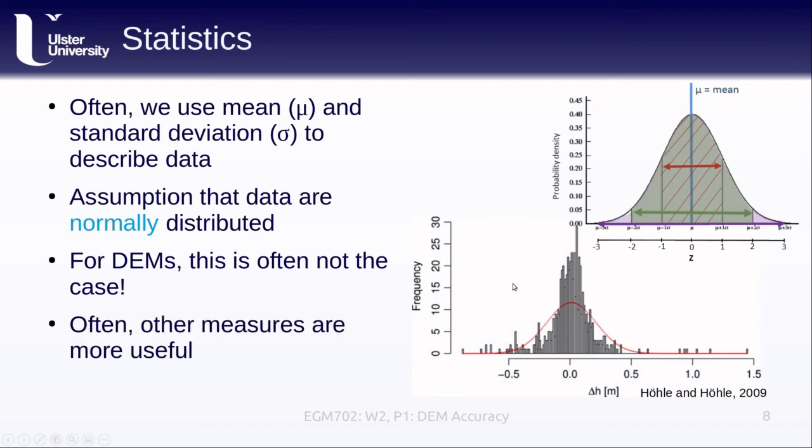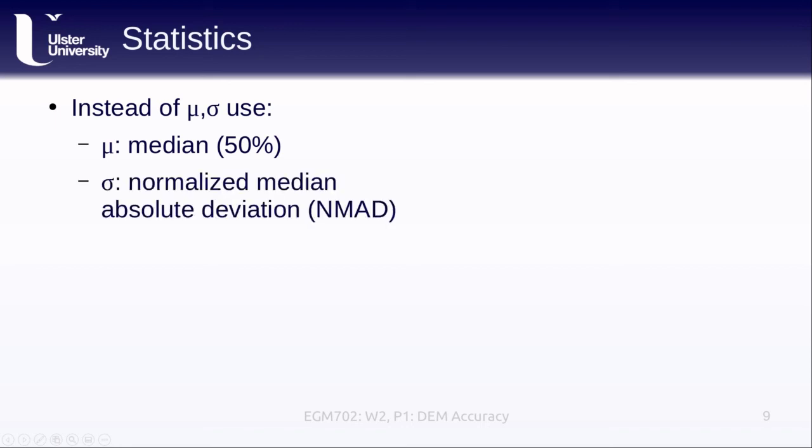That is to say, other measures that we might use are more useful. Instead of the mean and standard deviation, we might use something like the median. So the 50th percentile of the data set. This is usually a little bit more resilient to large outliers in the data. It's not as affected by these large outliers. Another example of a statistic and its sort of corresponding Gaussian metric is the normalized median absolute deviation or the NMAD. And this is sort of a proxy for the standard deviation.